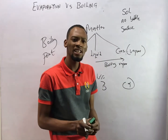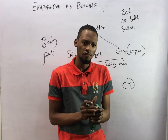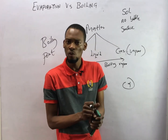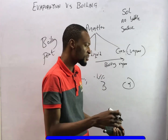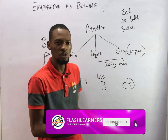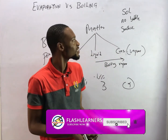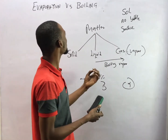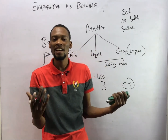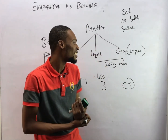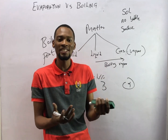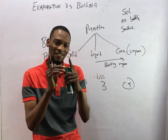For boiling, temperature must be kept constant — once you drop the temperature below the boiling point, boiling stops. So that's the difference between evaporation and boiling, and their similarities as well. Hope you enjoyed this video. If so, feel free to subscribe to this channel. Thank you.